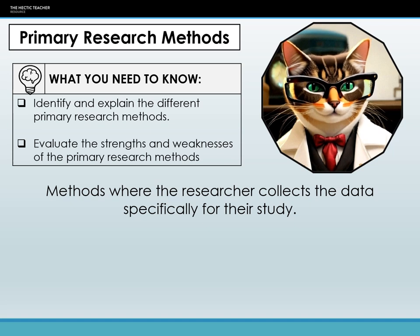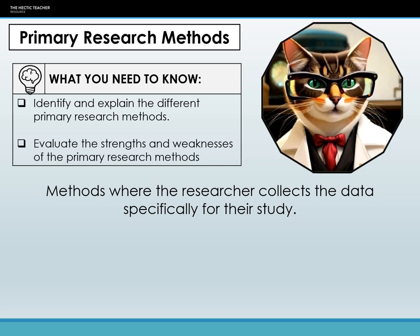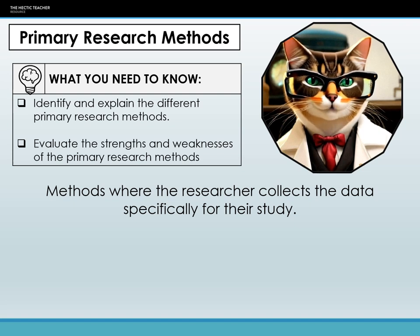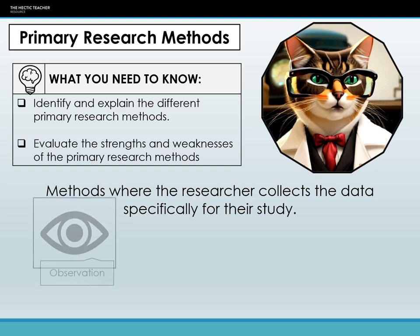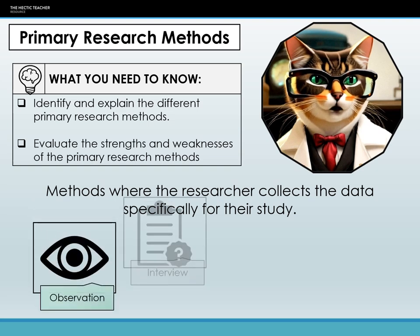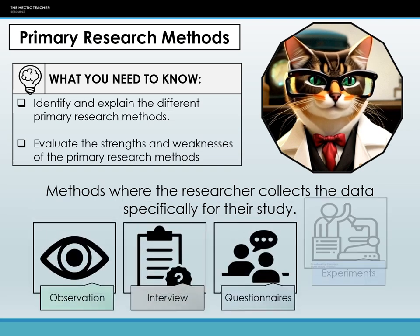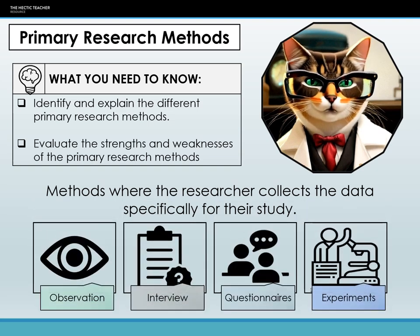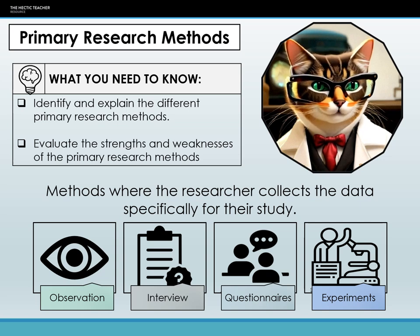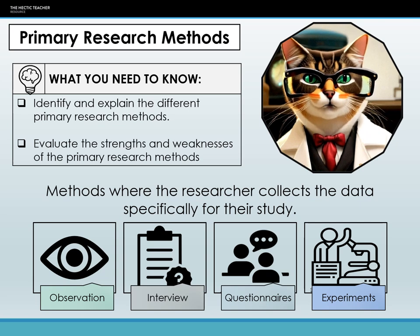In this video, we will delve into the four main primary methods sociologists employ to investigate the complexities of human society. Specifically, we will scrutinize four pivotal methods: observations, interviews, questionnaires, and experiments. Each method plays a distinctive role in the sociological toolkit, offering researchers unique avenues to explore various facets of social life.